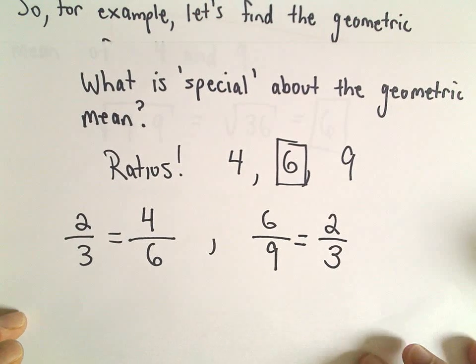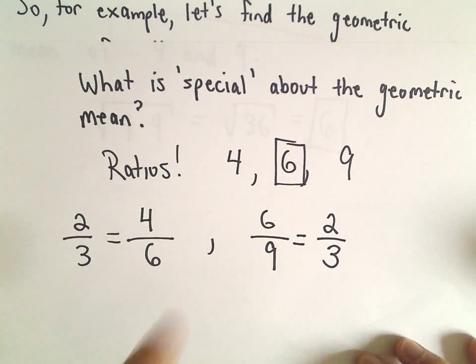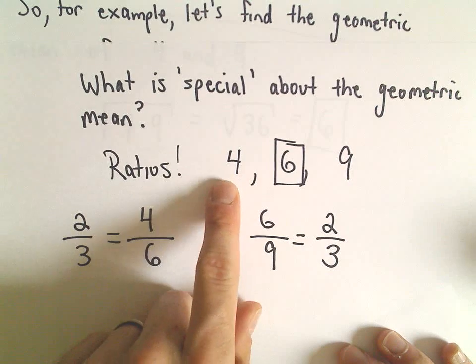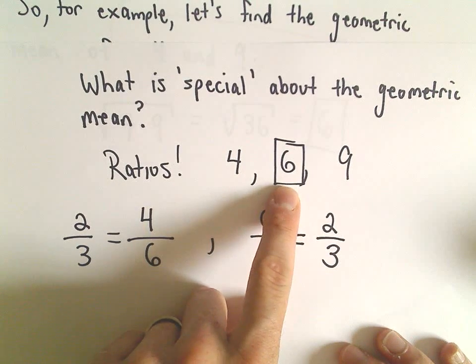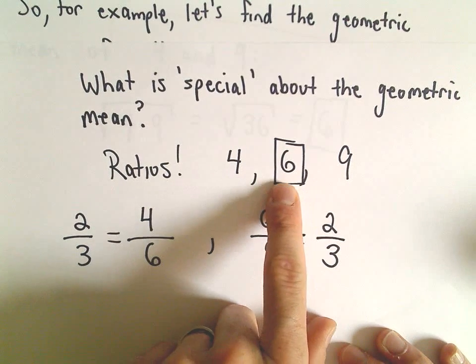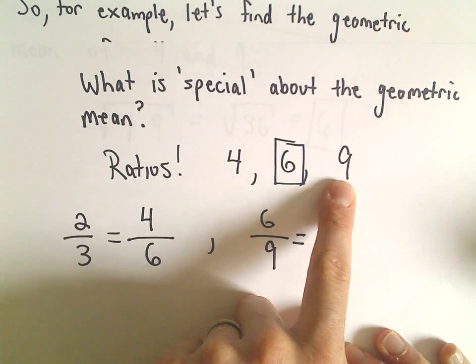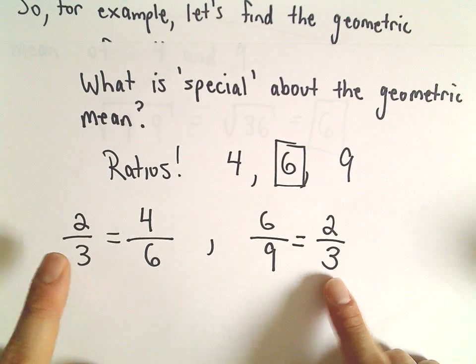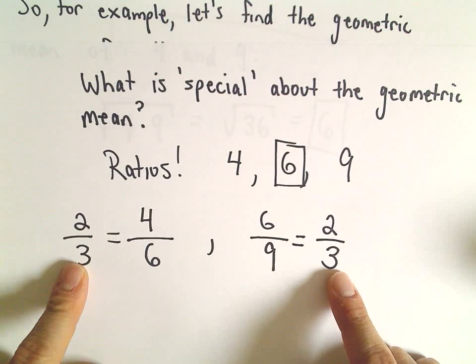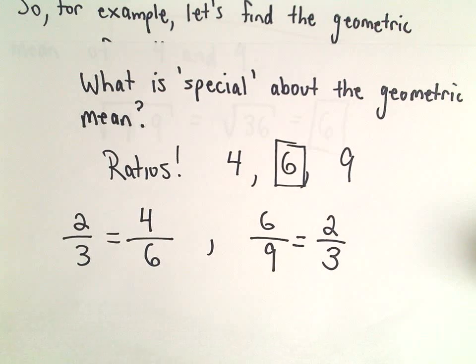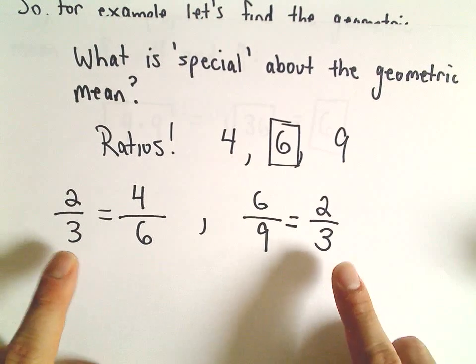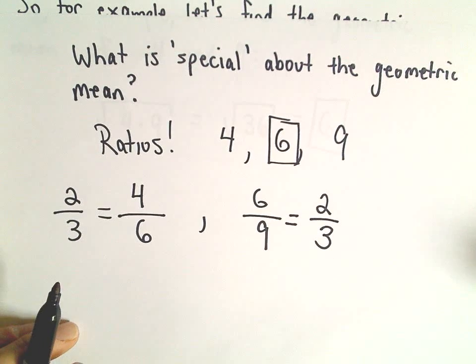So this is what's special about the geometric mean. If you take the ratio of the small number to the geometric mean, and then the ratio of the geometric mean to the larger number, those ratios are going to be the same. That's how you can think about the geometric mean - it's giving equal ratios of those two values.